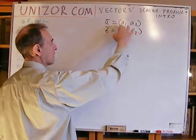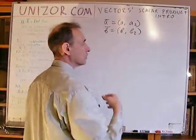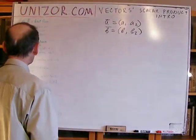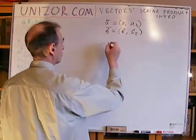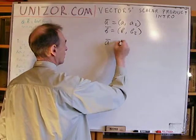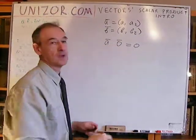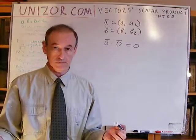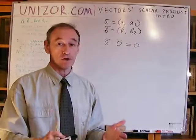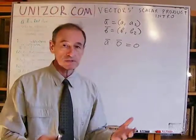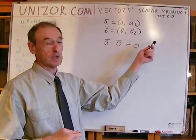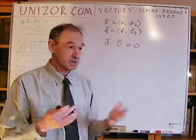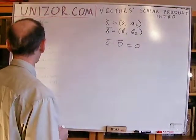Rule number two: the scalar product of any vector with the null vector — the zero vector, which has zero length — will result in the real number zero. I think it's very reasonable and logical.